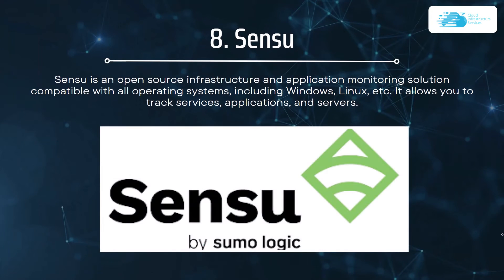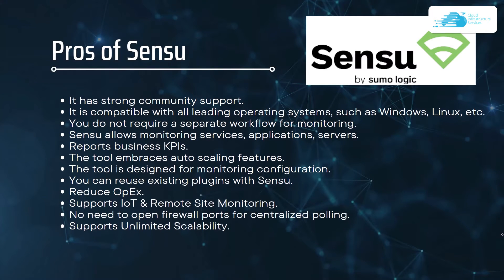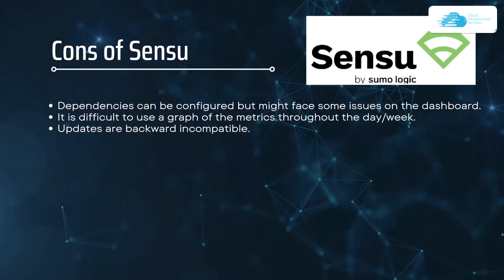Number eight on our list is Sensu. Sensu is an open source infrastructure and application monitoring solution compatible with all operating systems, including Windows, Linux, and macOS. It allows you to track services, applications, and servers. The pros include strong community support, compatibility with all leading operating systems, no separate workflow required for monitoring, ability to report business KPIs, and an auto-scaling feature. The cons are that dependencies can be configured but may face some dashboard issues, it is difficult to graph metrics over the day or week, and updates are backward incompatible.